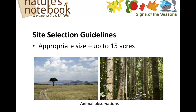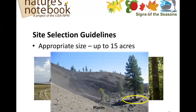For animal observations, your site will be very small if you can't see or hear the animals. So in a forested area it might be smaller than in a grassland area. For plants, your site could be just a portion of your yard or a small area you can walk through. It could also be as small as the drip line on a pine tree, for example.